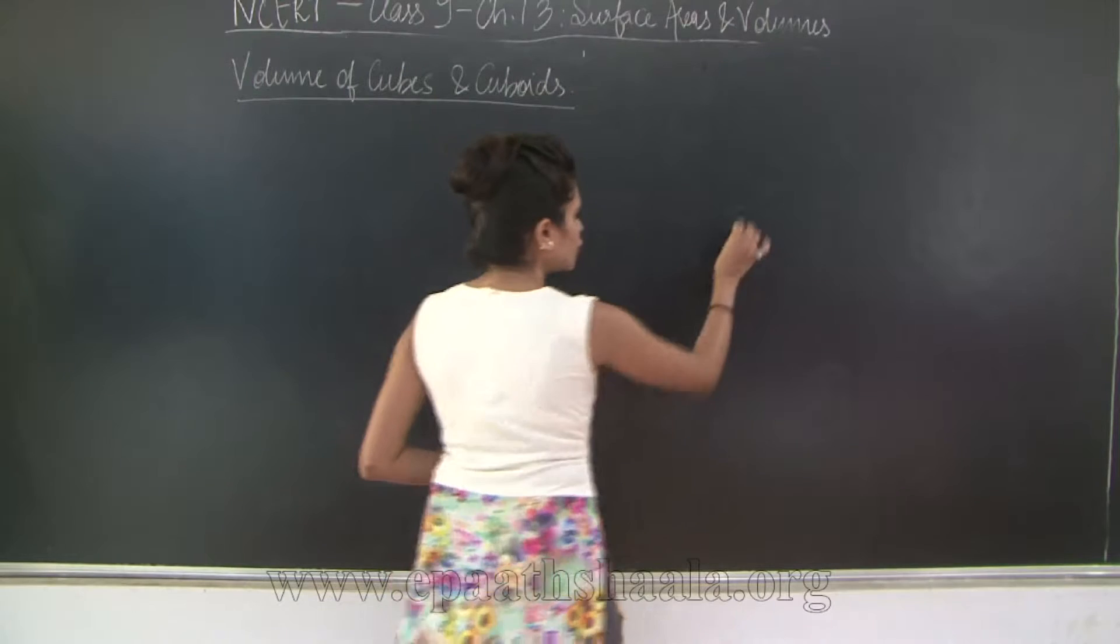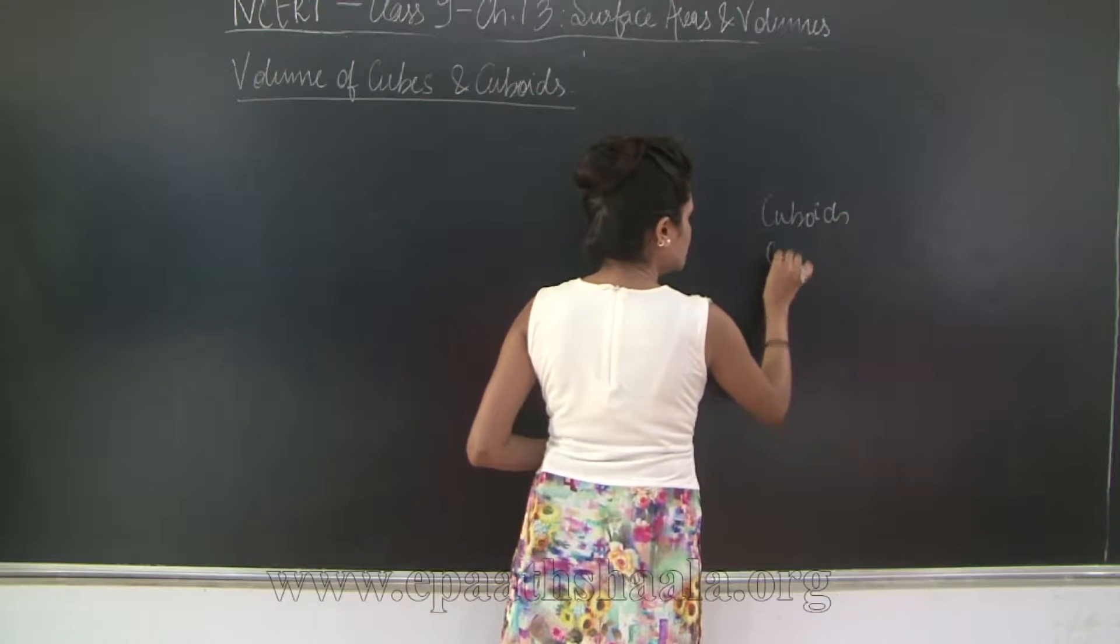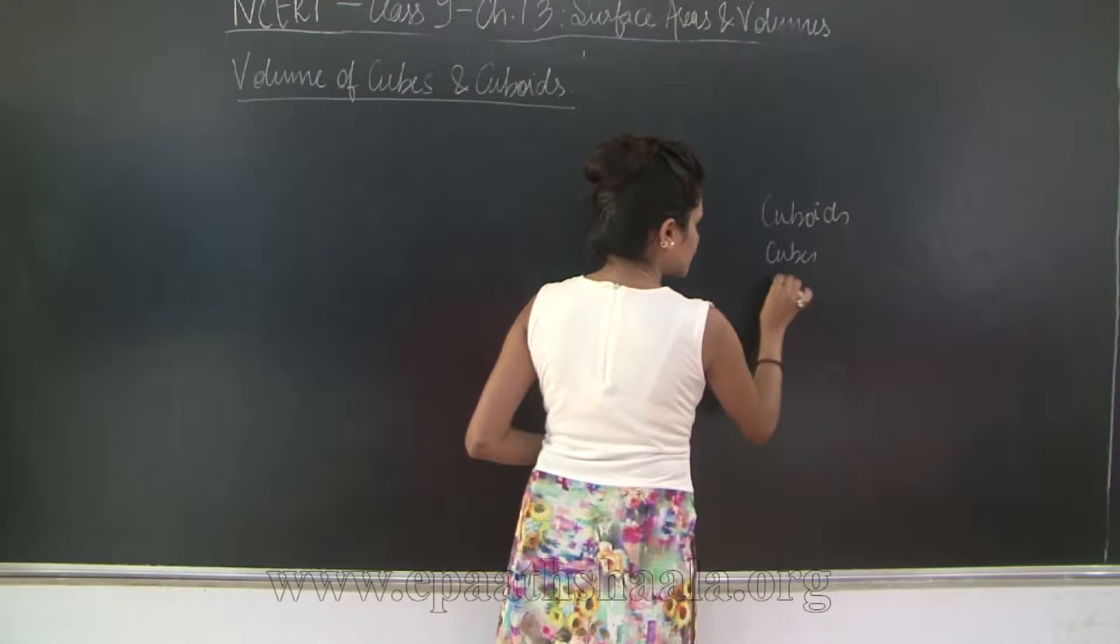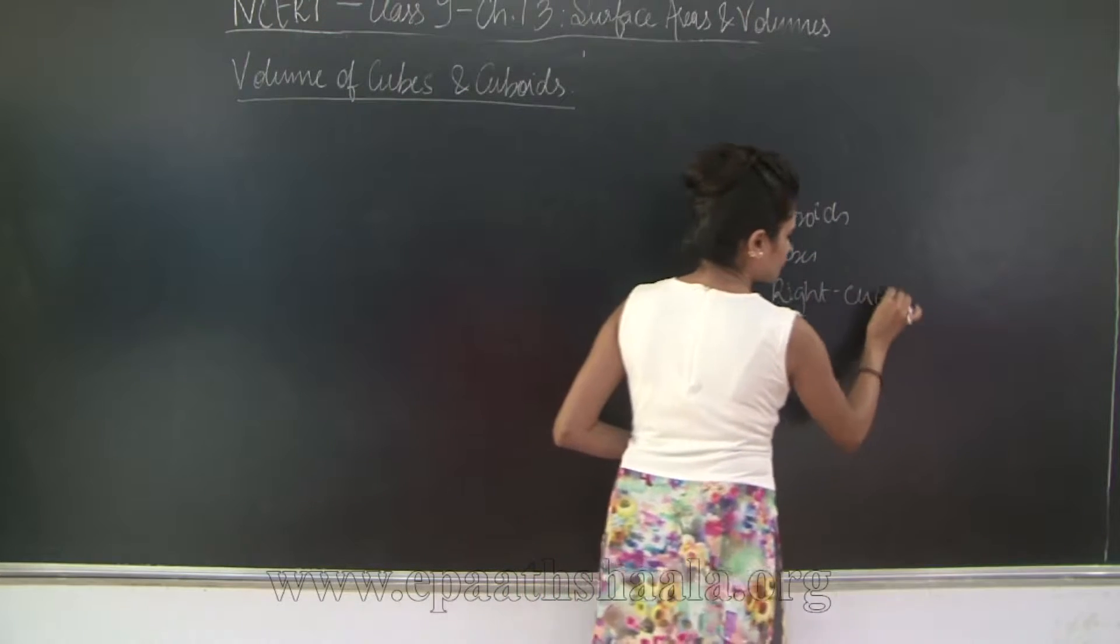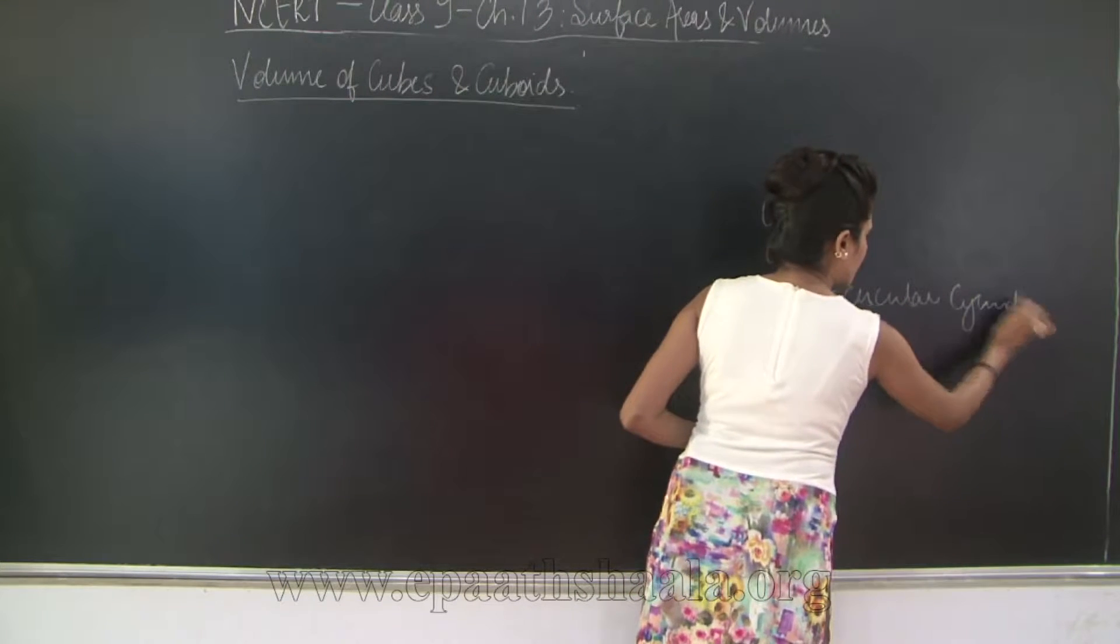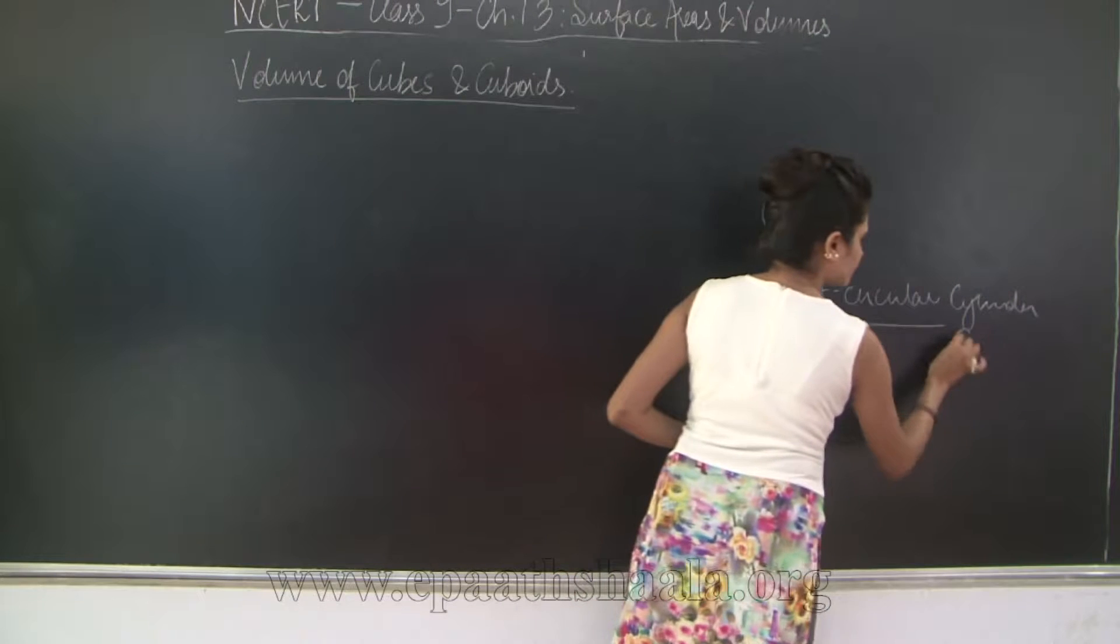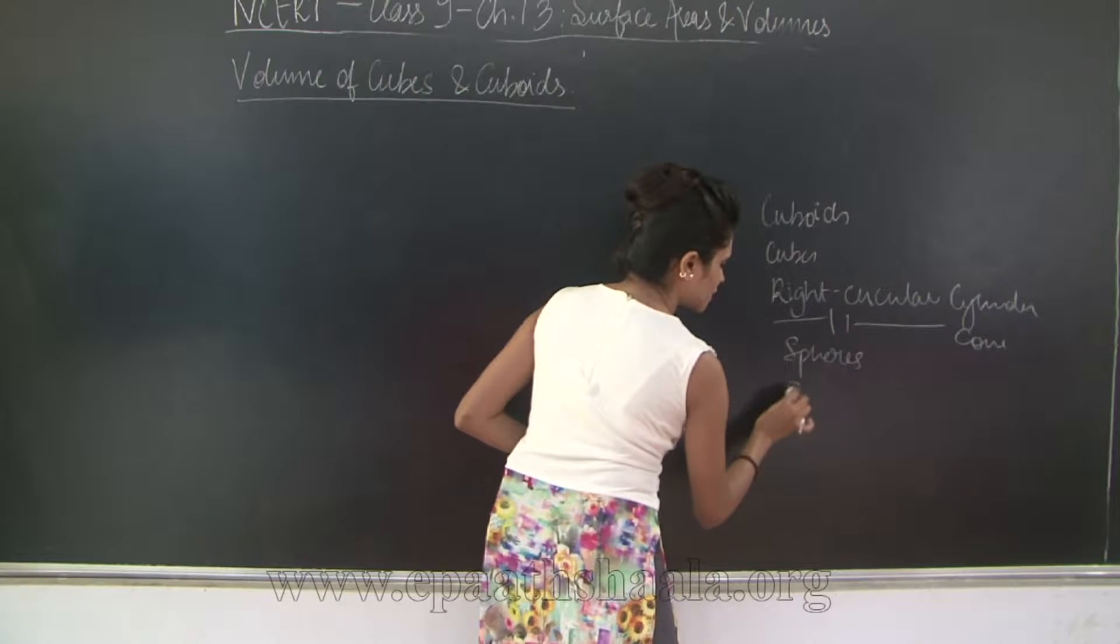We learnt about surface area of cuboids, cubes, right circular cylinder, right circular cone, spheres and hemispheres.